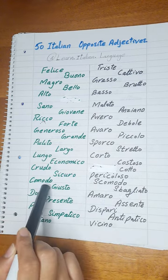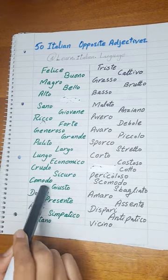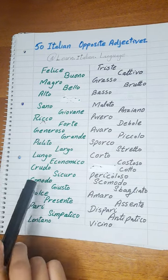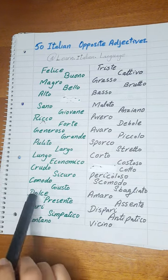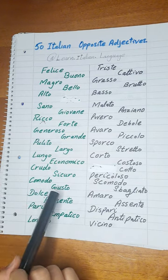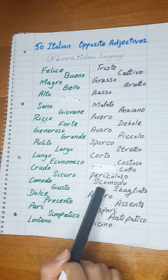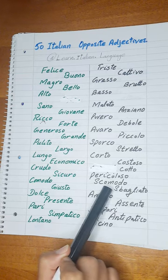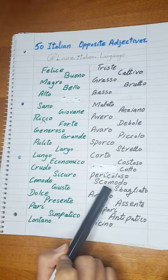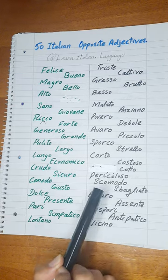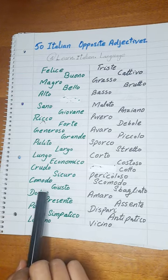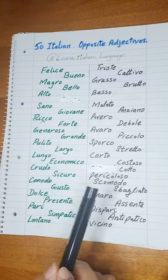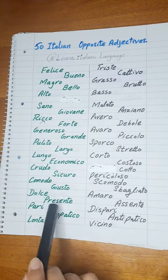Next is Comodo. Comodo means comfortable or easy. The opposite of Comodo is Scomodo. Scomodo means uncomfortable. Comodo — comfortable. Scomodo — uncomfortable.